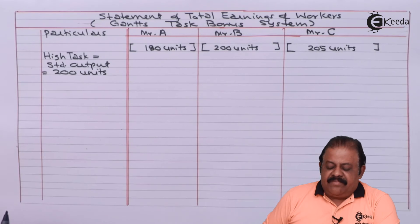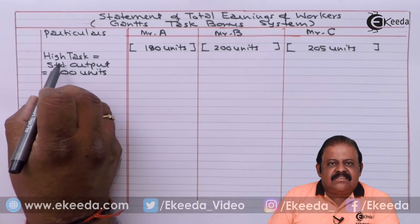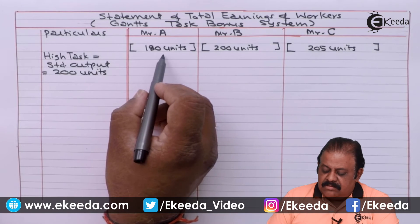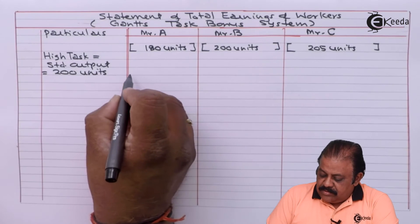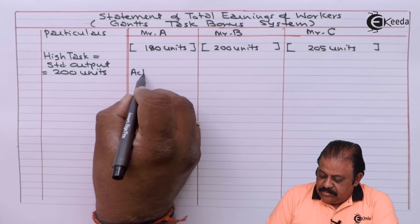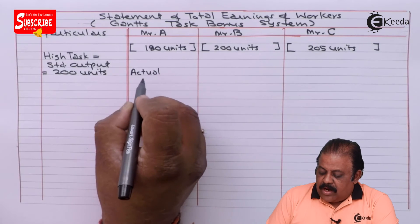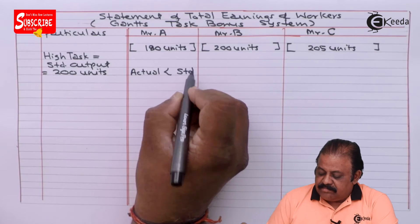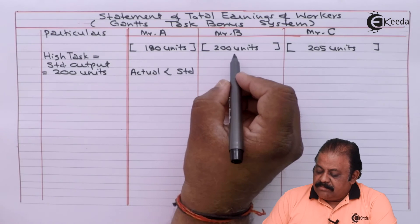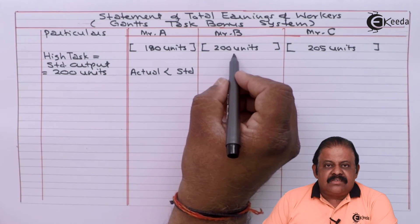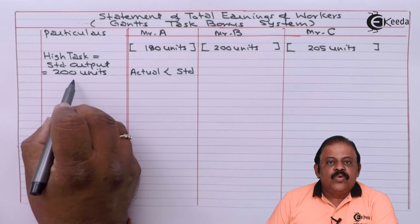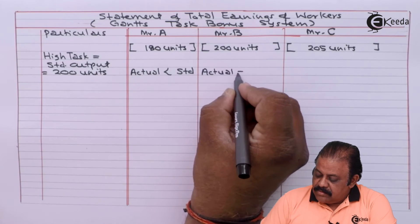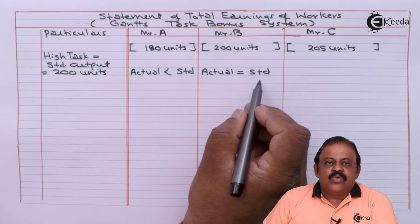Actual output will be compared with the high task, that is the standard output. In case of A, actual output is 180 units whereas standard is 200 units, so actual output is less than standard. In case of Mr. B, actual is 200 units and high task standard output is 200 units, so here actual is equal to standard.